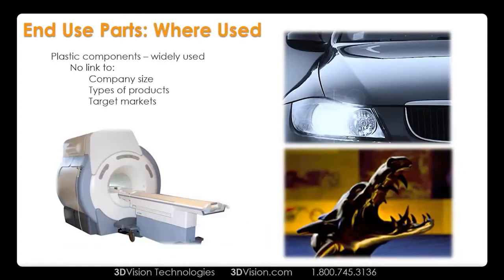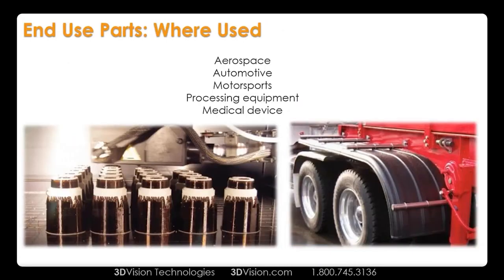There's no link to company size, types of products, or markets for who's producing these. Plastic components are used everywhere. We have a picture of what I believe is a CAT scan machine. We have a little organic-shaped dragon on the right-hand side — I have more information on him later. And automotive — some cars are almost completely out of plastic. I've actually seen a completely 3D-printed car. Where it's used: aerospace, automotive, motorsports, processing equipment, medical devices — you name it, people are producing stuff everywhere.